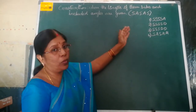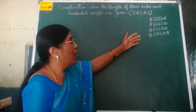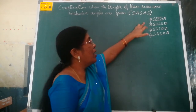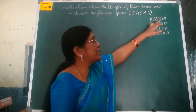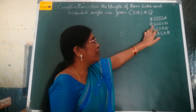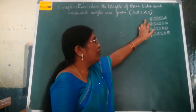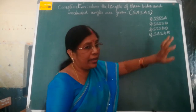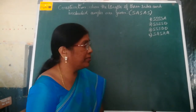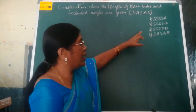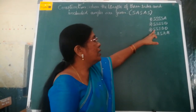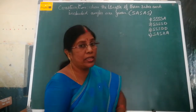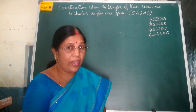we can construct a quadrilateral. Already we have learnt when 4 sides and an angle is given, and 4 sides and a diagonal is given, and also we have learnt 3 sides and 2 diagonals are given,